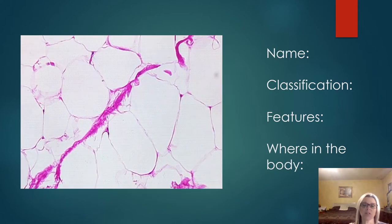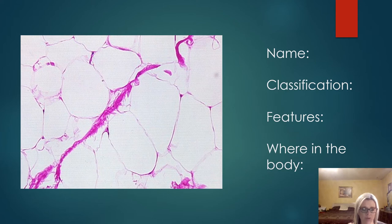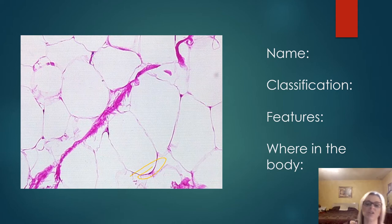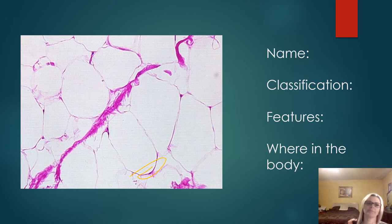Pause. Give me the name, classification, features, and where in the body you find this. If you said adipose, you are correct — it is a connective tissue. The feature is this darkened portion, which is the nucleus. You can find this in areas like the stomach or surrounding the visceral organs. Don't miss this one — it's easy.